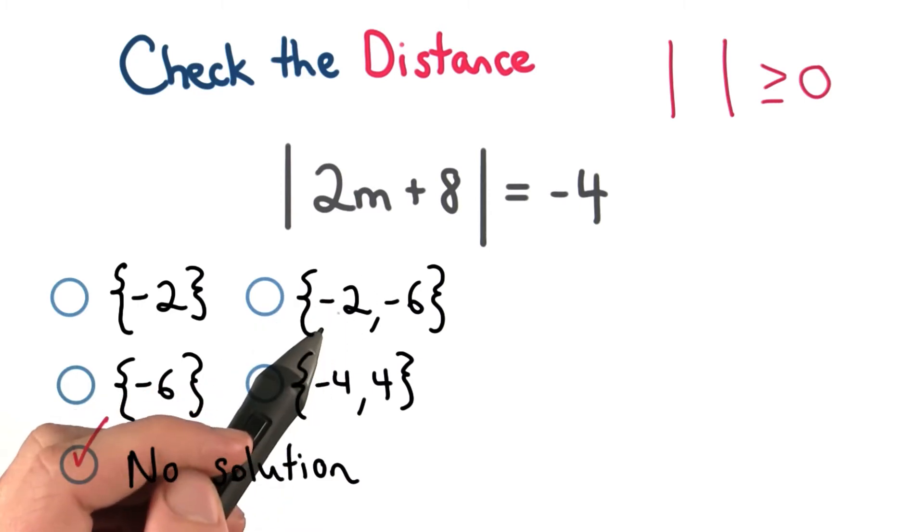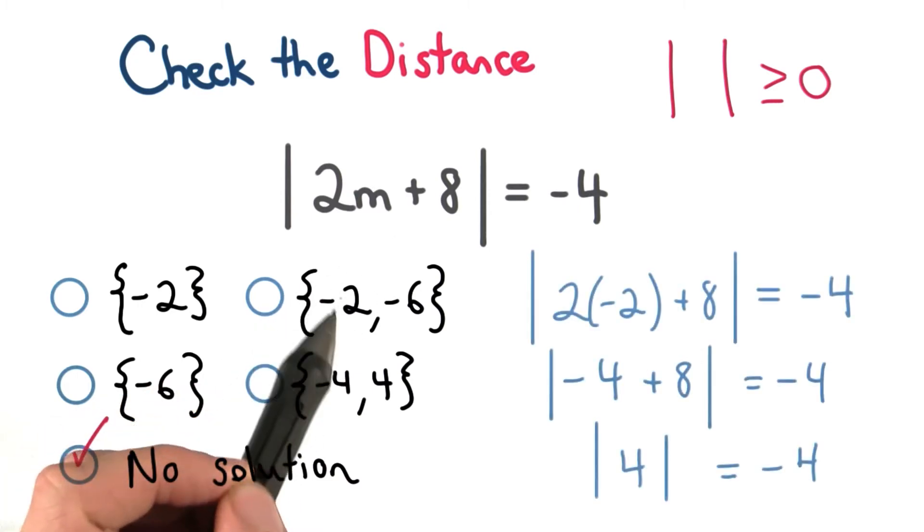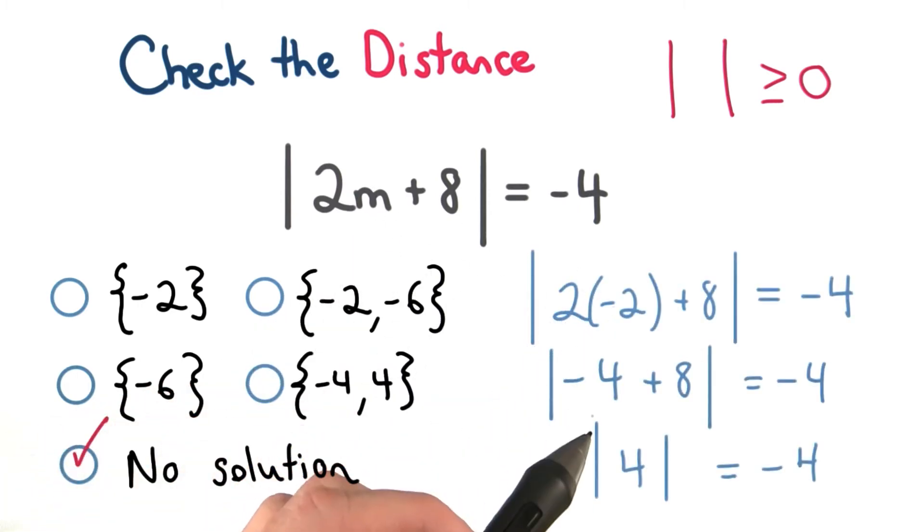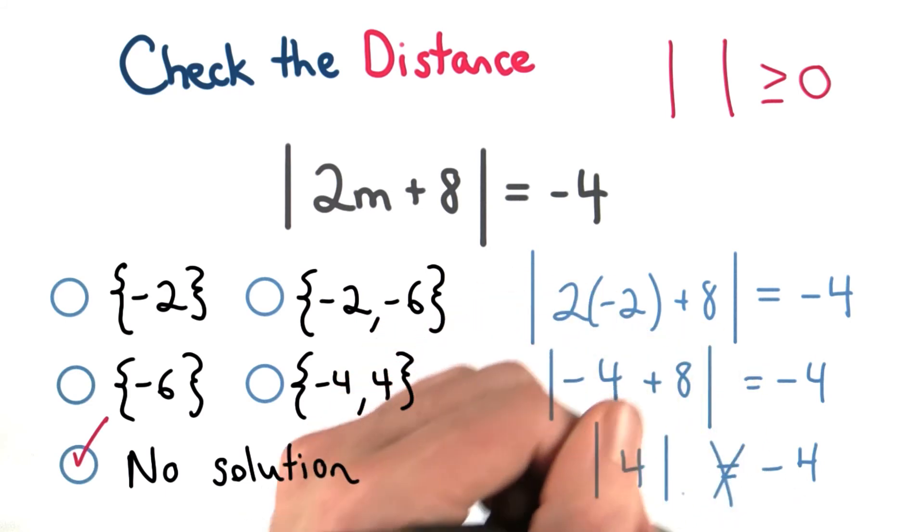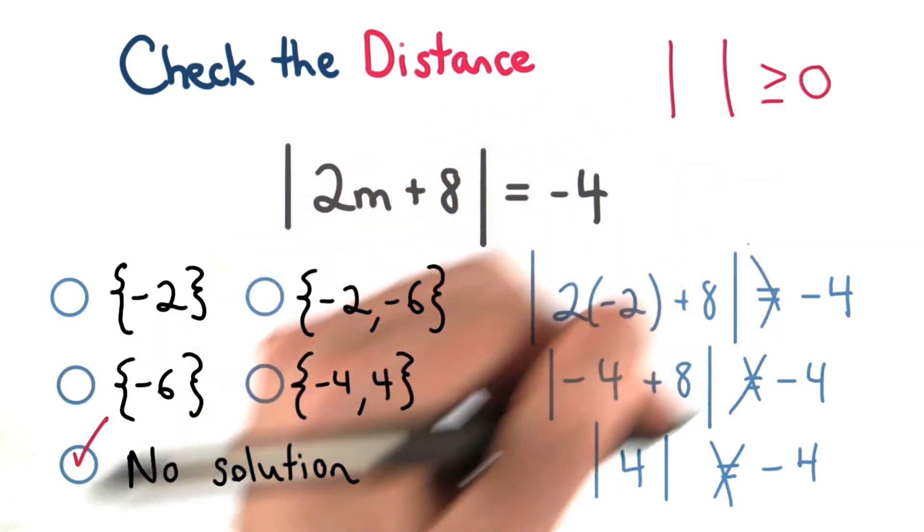But let's check negative 2 to see the result. I can plug negative 2 in for m. 2 times negative 2 is negative 4, and negative 4 plus 8 is positive 4. We know the absolute value of this 4 is positive 4. It's the distance from 0, and it can't be negative 4. It's not true. And that's why none of these solutions work.